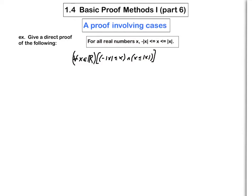Notice how I wrote out this statement as an and statement, as a conjunction, because this really says two things: it says that minus absolute x is less than or equal to x, and x is less than or equal to absolute x. When writing your proof, you really have to realize that there are two things to do separately.